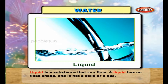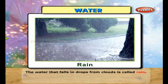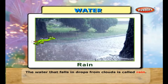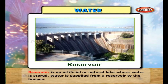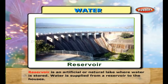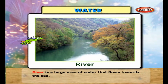is not a solid or a gas. The water that falls in drops from clouds is called rain. A reservoir is an artificial or natural lake where water is stored. Water is supplied from a reservoir to the houses.